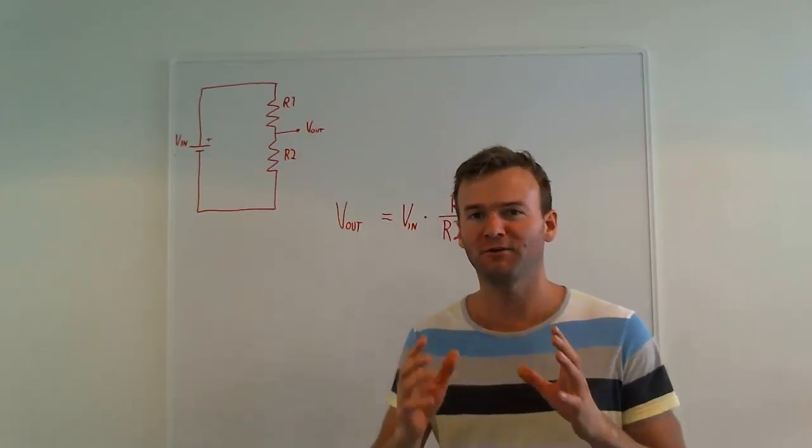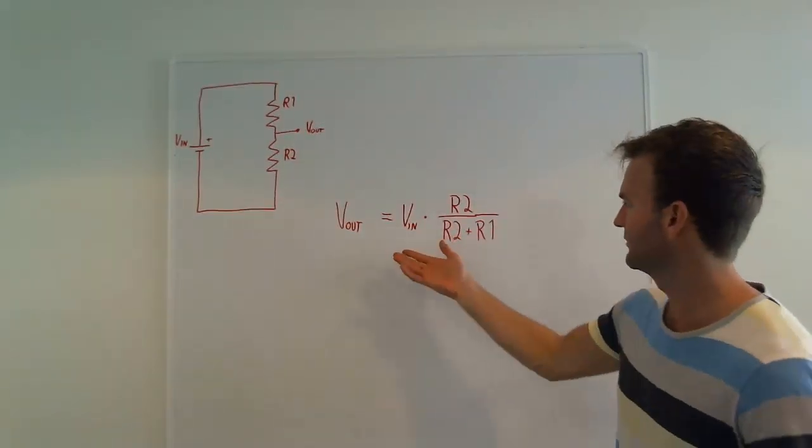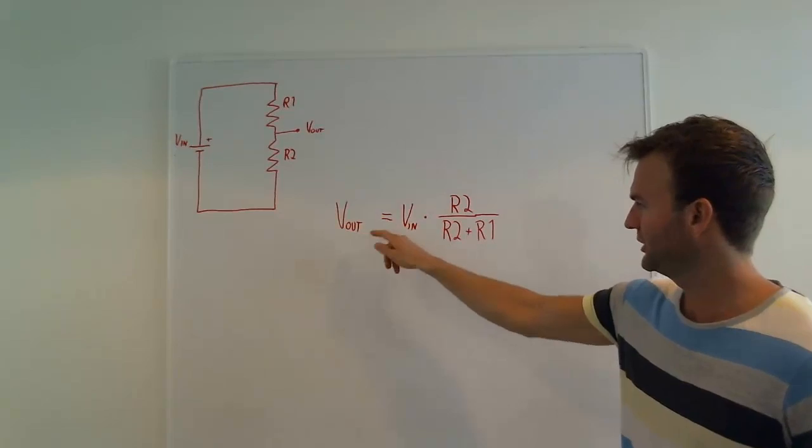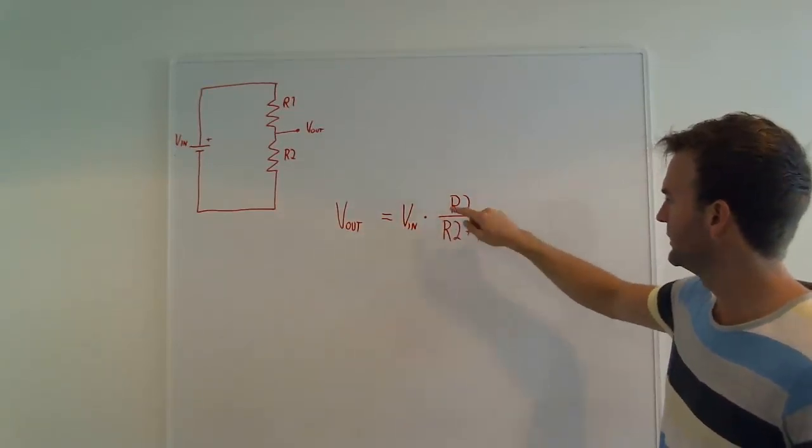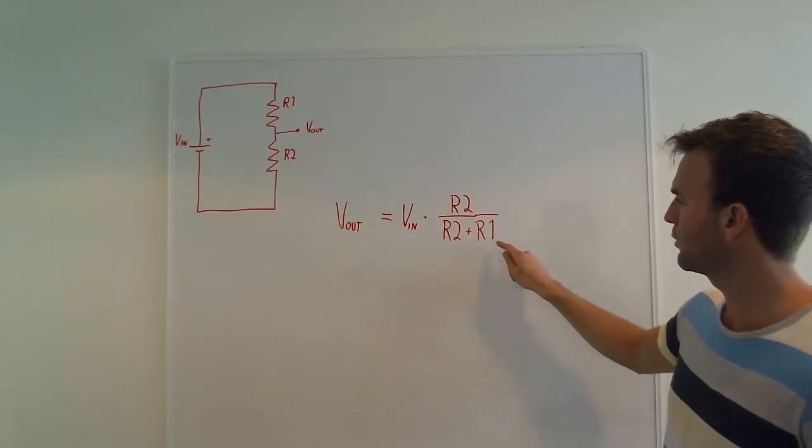The formula for figuring out the output voltage is this. The output voltage equals the voltage input times R2 divided by R2 plus R1.